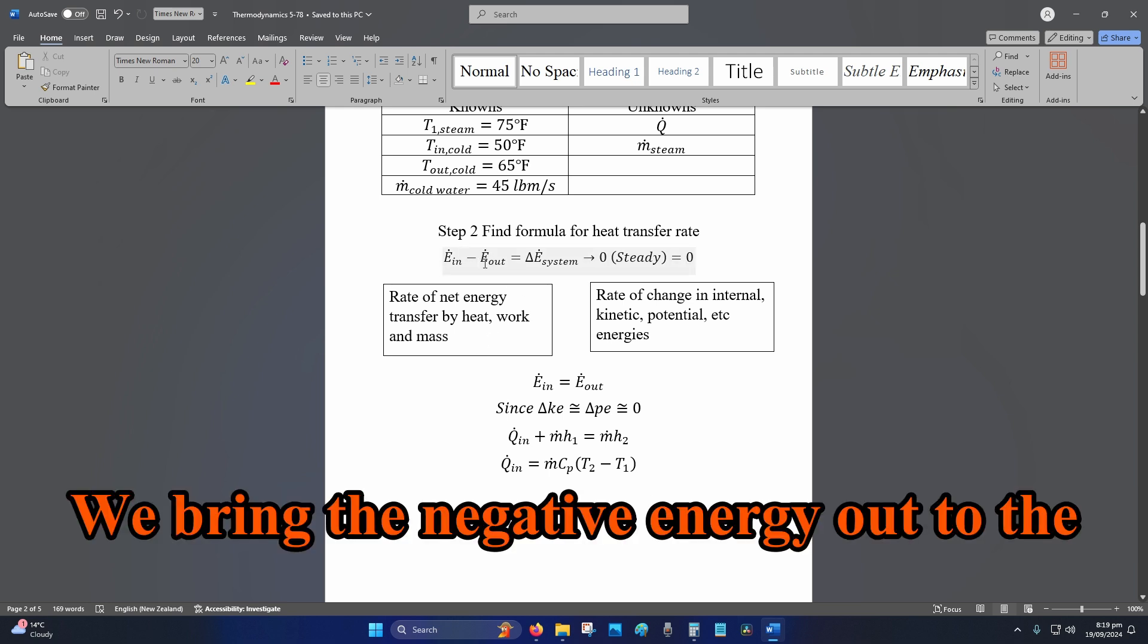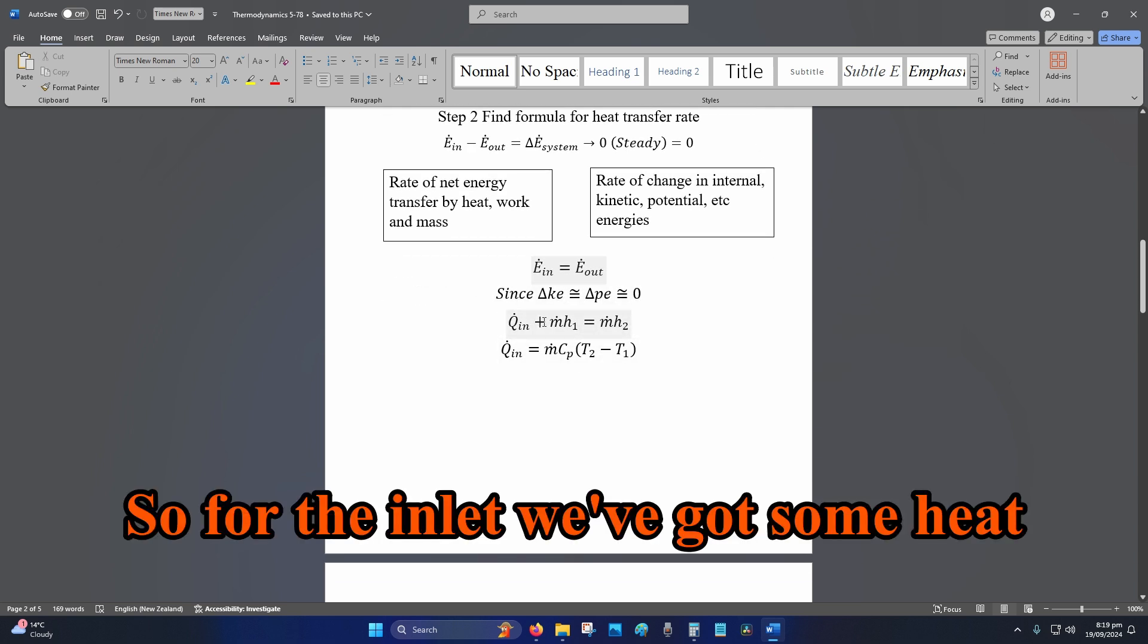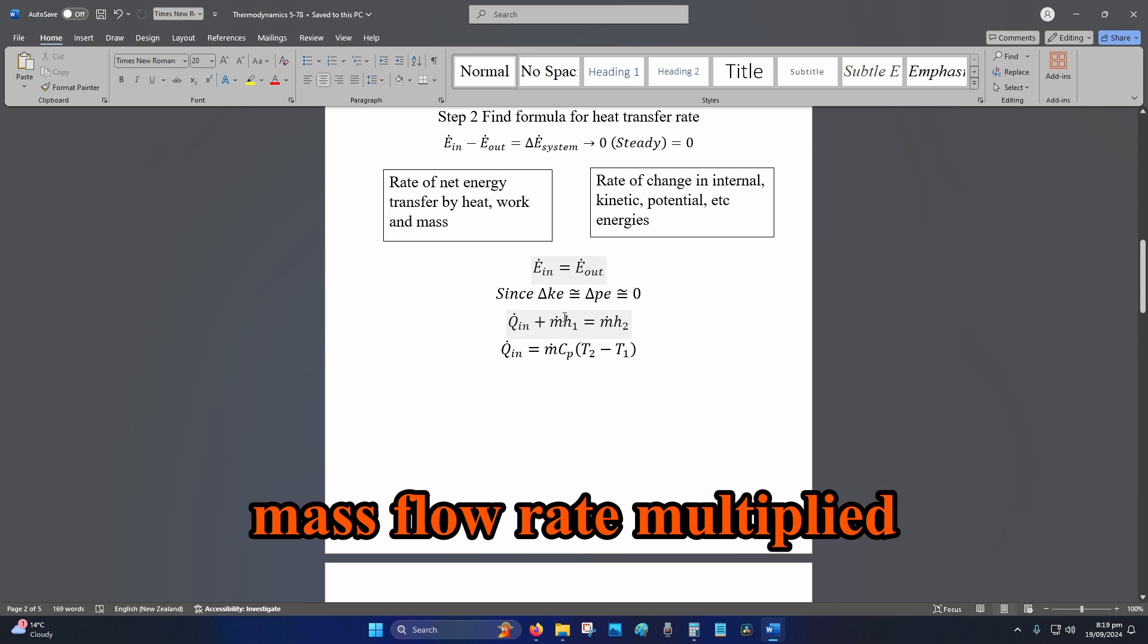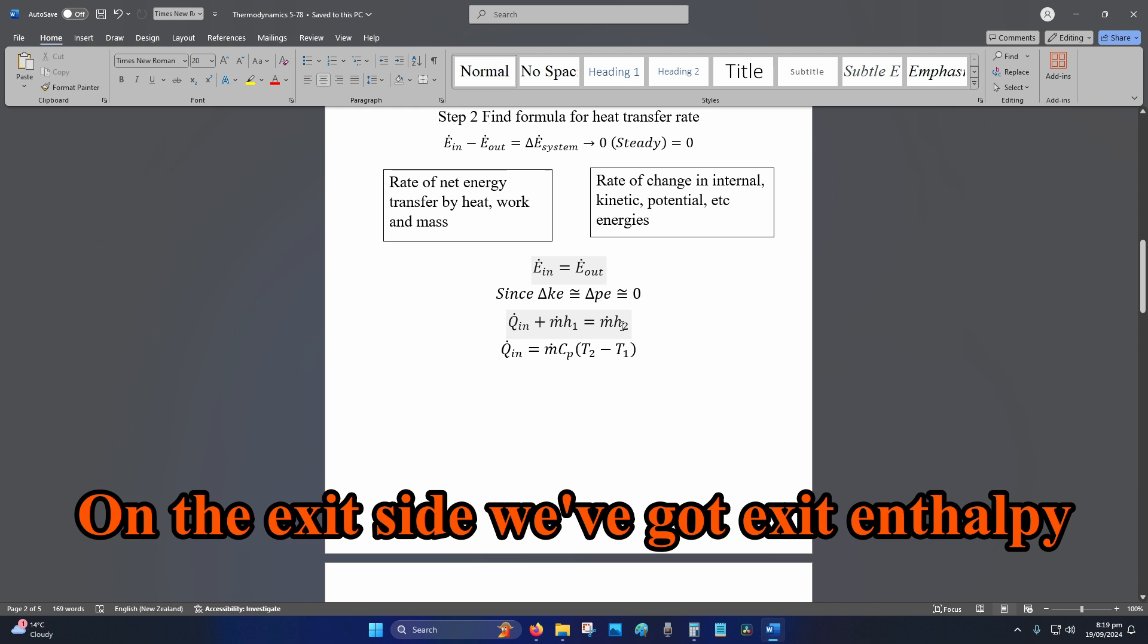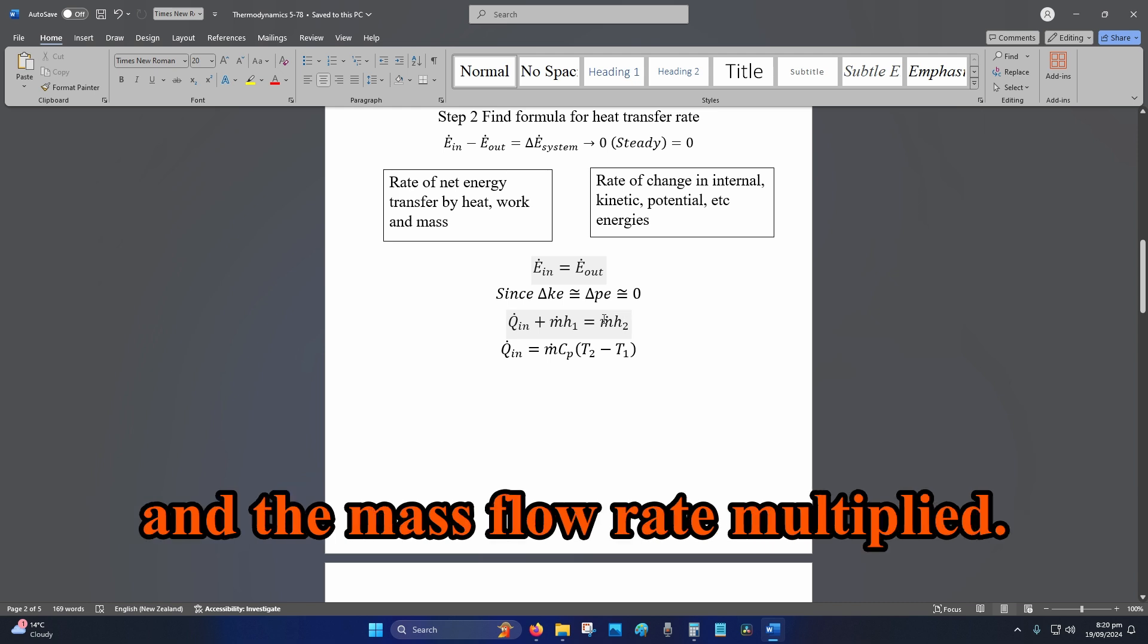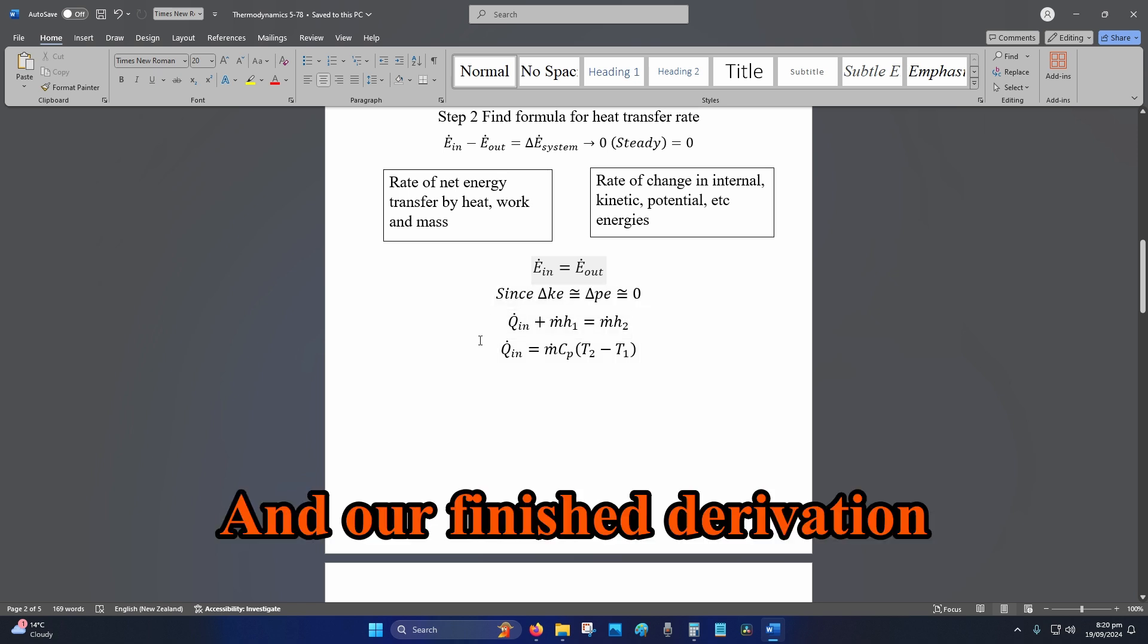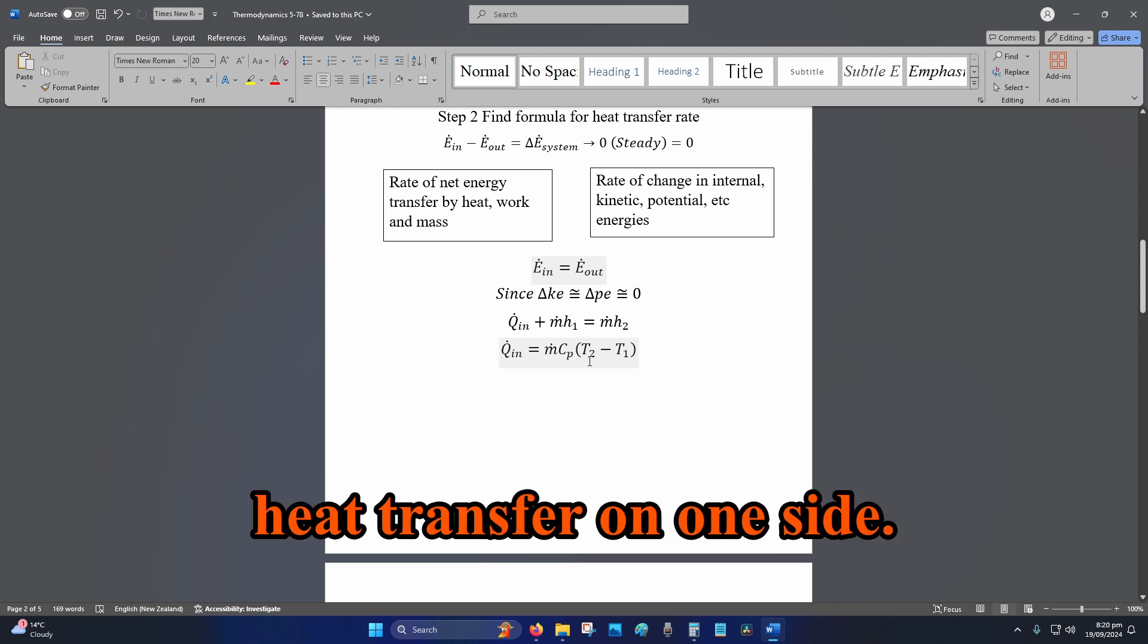We bring the negative energy out to the other side to balance the equation. So for the inlet we've got some heat transfer rate, we've got mass flow rate multiplied by the inlet enthalpy. On the exit side we've got exit enthalpy and the mass flow rate multiplied and our finished derivation of the equation is heat transfer on one side.